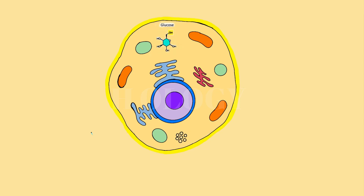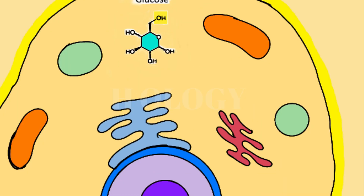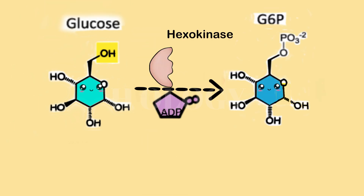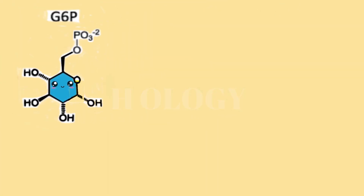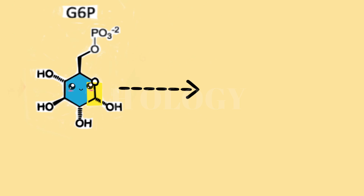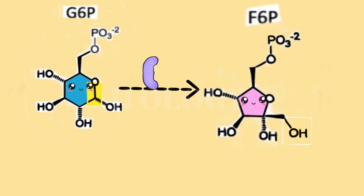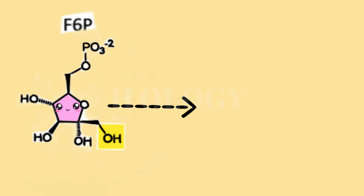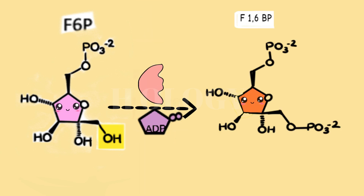Let's now take a closer look at the steps of glycolysis. Glycolysis can be summarized into 10 steps, each facilitated by specific enzymes. Step 1: Glucose is phosphorylated by the enzyme hexokinase to form glucose-6-phosphate. Step 2: The enzyme phosphoglucose isomerase converts glucose-6-phosphate into fructose-6-phosphate. Step 3: Fructose-6-phosphate is phosphorylated by the enzyme phosphofructokinase, generating fructose-1,6-bisphosphate.